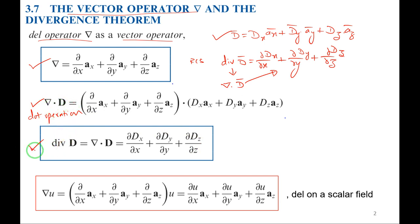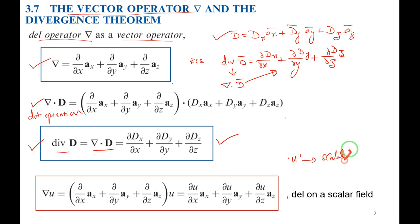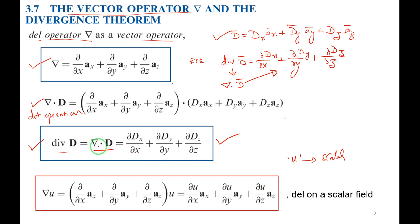For the sake of usefulness, instead of writing divergence of D vector, I can write it as del·D vector — they are one and the same. If I operate the del operator on a scalar field — say u is a scalar quantity — then del·u can be written as (∂u/∂x)ax + (∂u/∂y)ay + (∂u/∂z)az. Notice that divergence of a vector gives a scalar, but del operating on a scalar gives a vector, because you can see the unit vectors ax, ay, az.